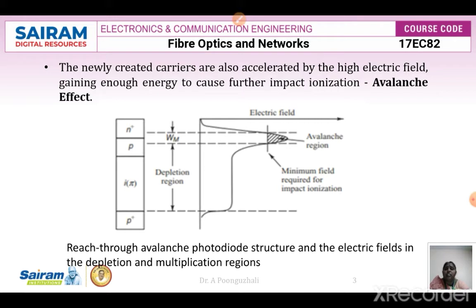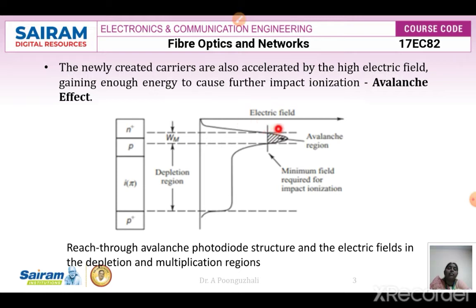In your photodiode structure, we have a P+ type material, your intrinsic layer, a P material, and your N+ region. Between the P and N+ regions, we have the depletion region — this is the width of the field region — and this is the avalanche region where more electrons are released. A high electric field is present, approximately 3×10⁵ volts per centimeter. This region is the avalanche region, and this is the minimum field required for the impact ionization process. When this electric field is present, photons make electrons release from the valence band, generating free electrons.